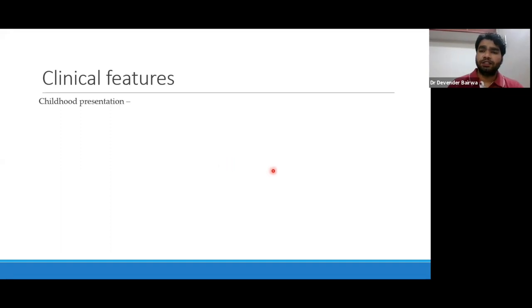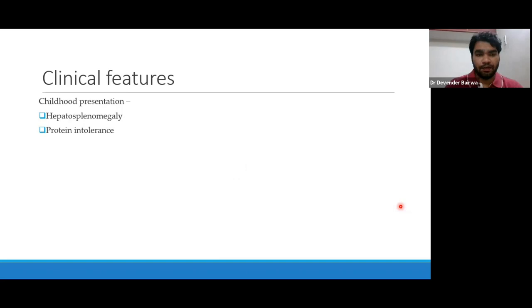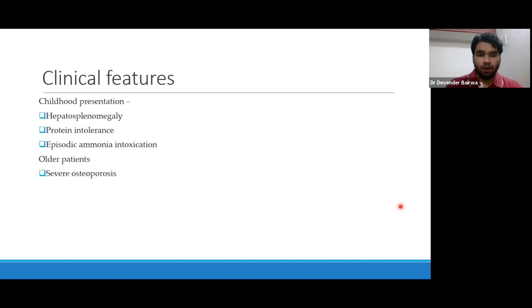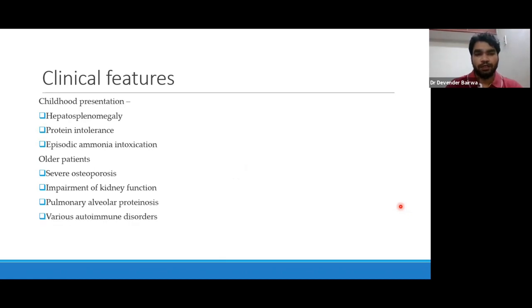Clinical features: in childhood, patients generally present with hepatosplenomegaly, difficulty in handling protein, protein intolerance, and episodic ammonia intoxication. In older patients, they present with severe osteoporosis, impairment of kidney function, pulmonary alveolar proteinosis, various autoimmune disorders, and some immune deficiency-like features due to the immune defect discussed.